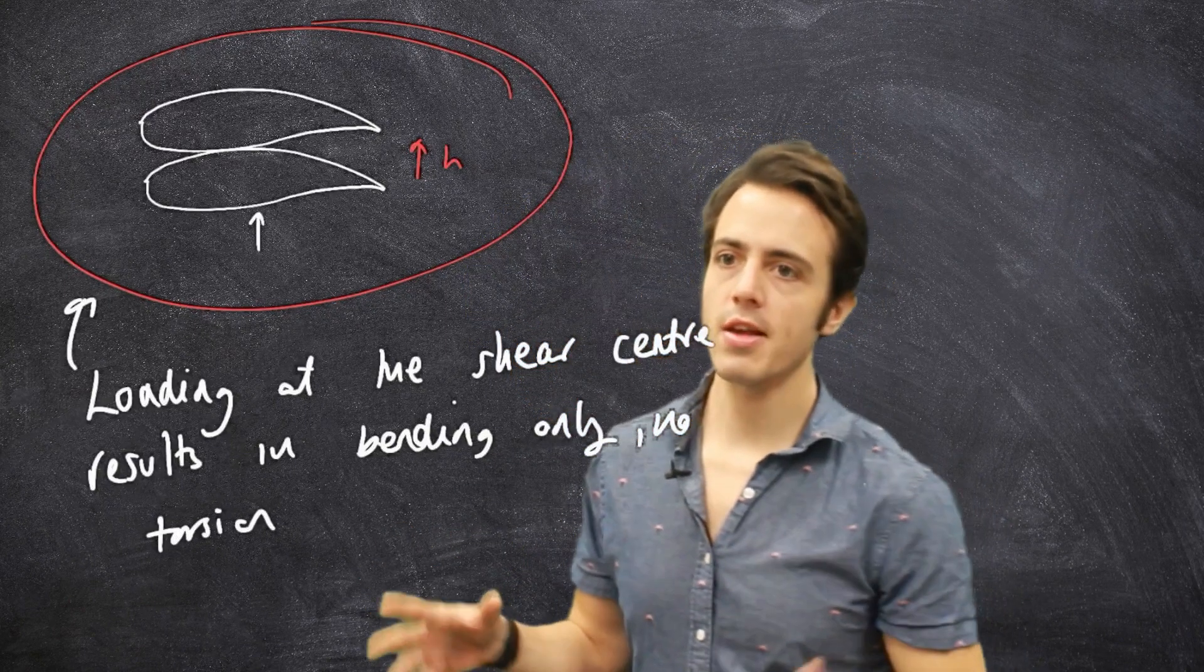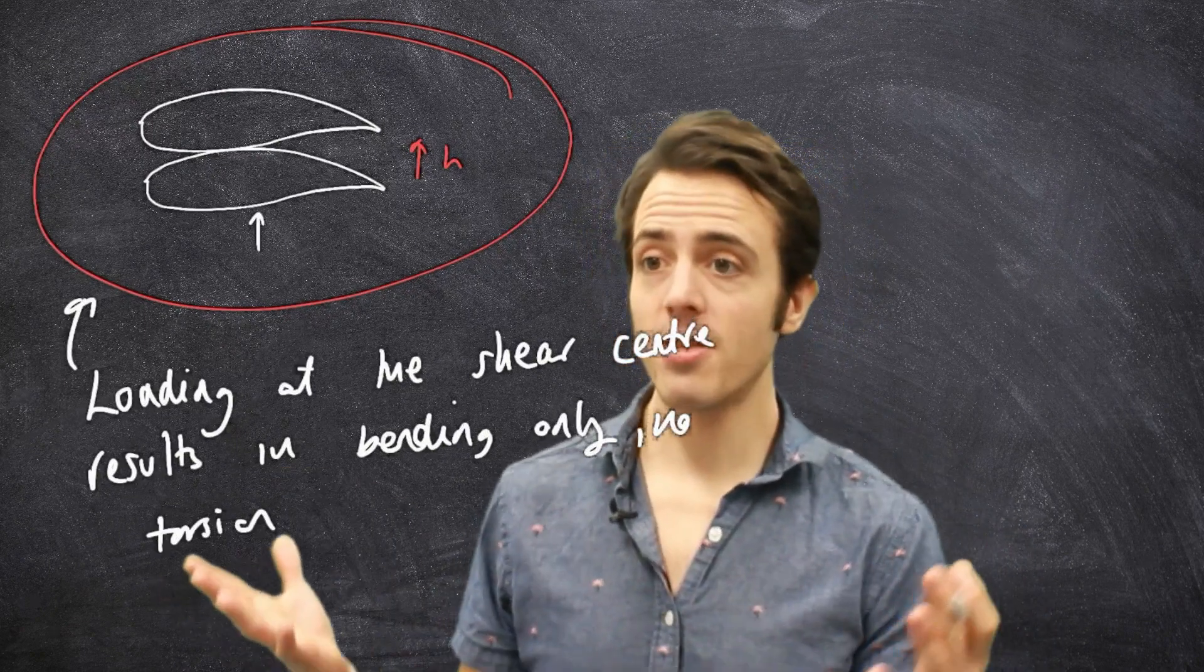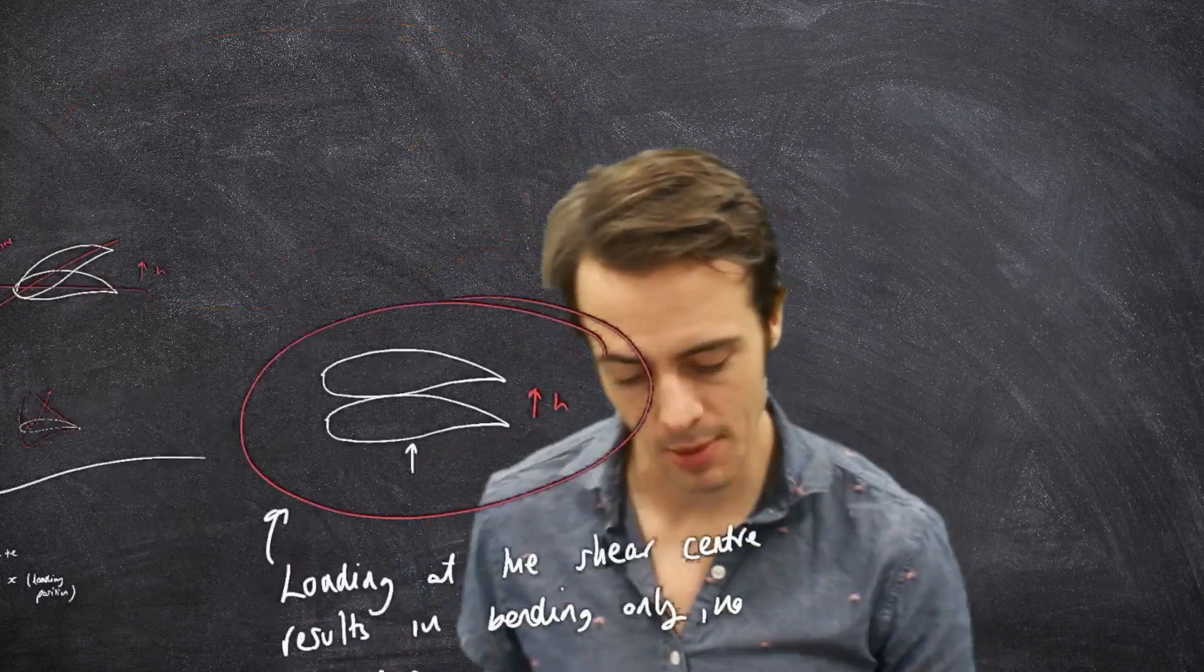Okay, so when we load at the shear center of a cantilever wing like this, when we load at the shear center, we get bending only, no torsion. And that's the definition that makes sense and is useful for us to use and will help us think about this.